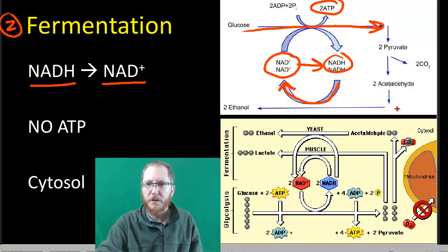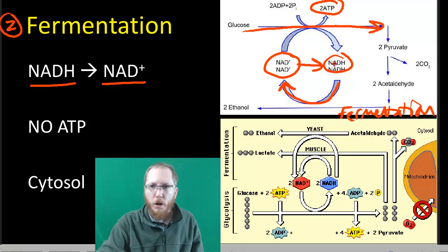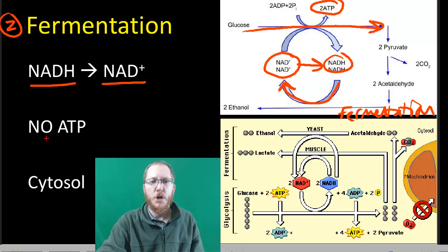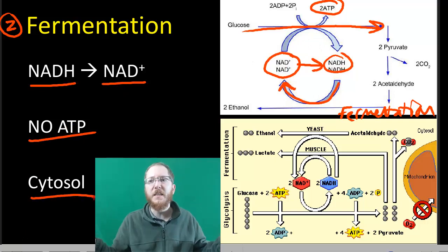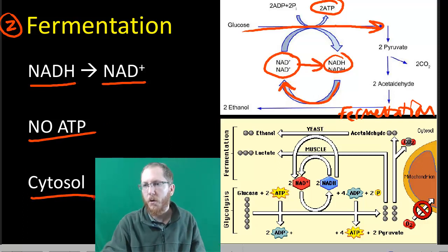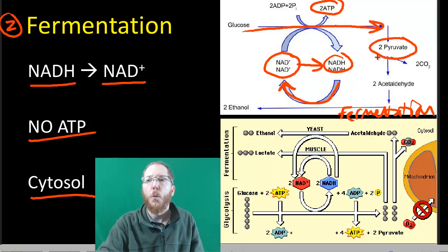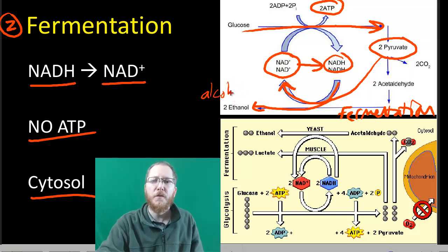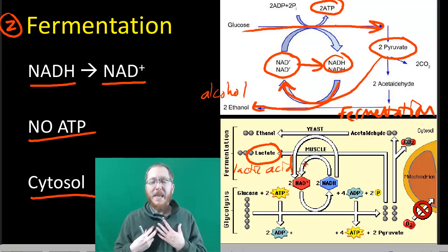This bottom part is showing alcohol fermentation, but it's similar to lactic acid. All it's doing, there's no ATP, nothing else magical happening. We're just converting NADH to NAD+ so we can keep doing glycolysis. No ATP is made and this is occurring in the cytosol. In the process of doing fermentation, pyruvate will be converted to something else. Pyruvate is converted to ethanol, which is alcohol. This would be called alcohol fermentation.